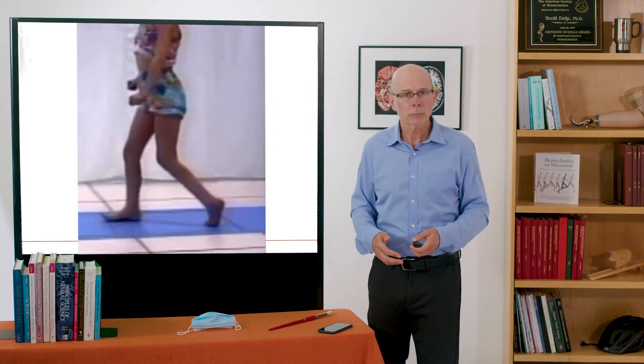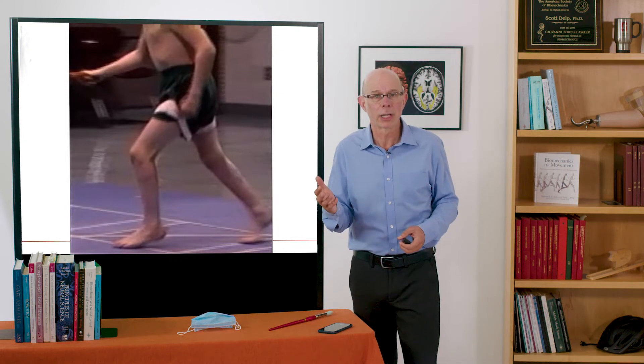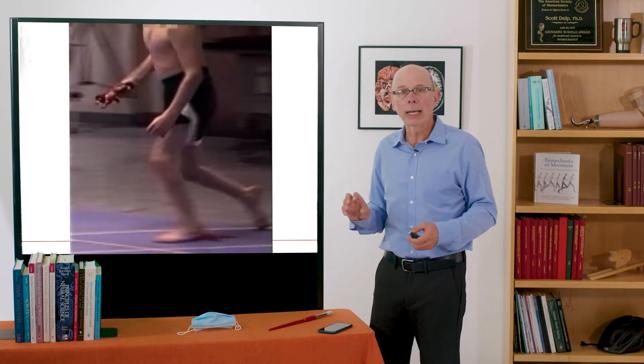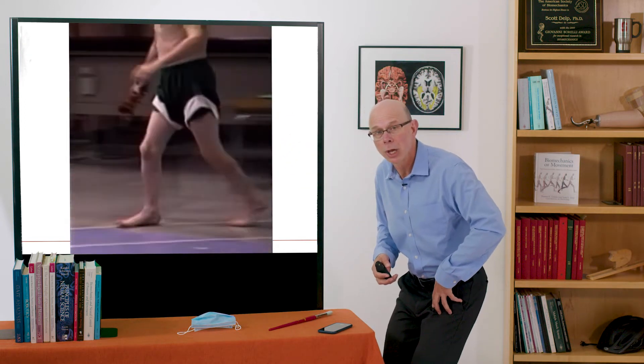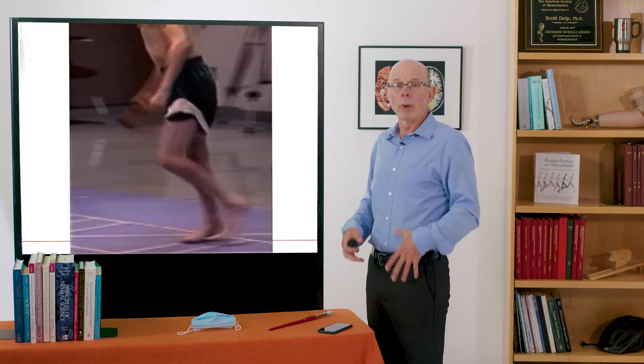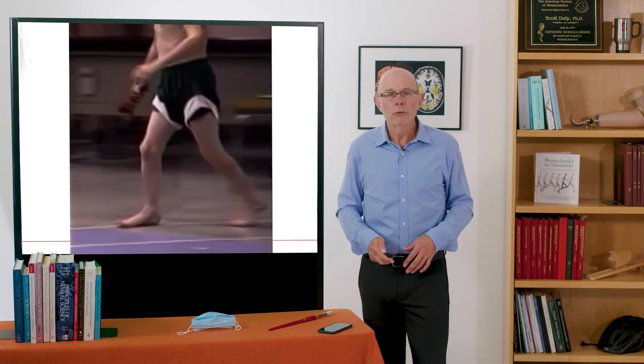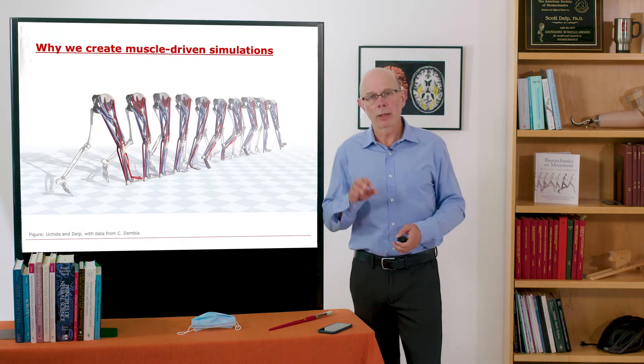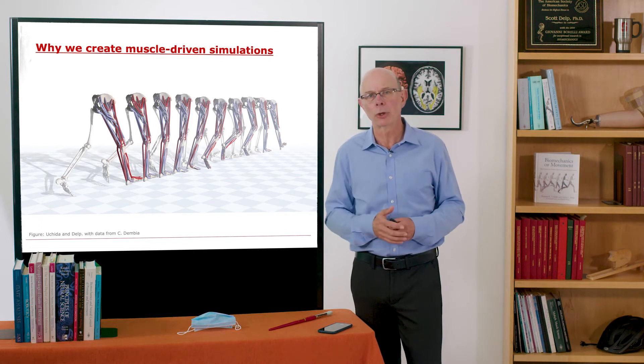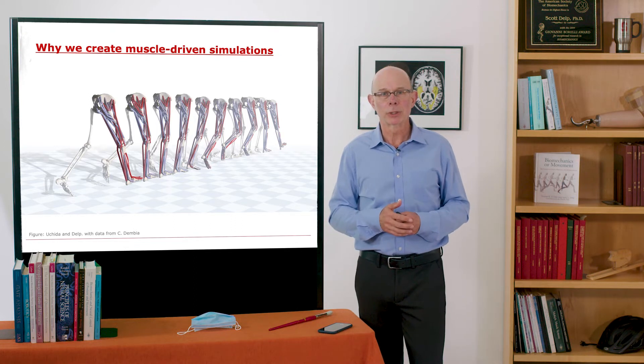We'd see patient after patient with crouch gait, for example, and we didn't know the contributing factors. In this case again, was it tight hamstrings or was it tight hip flexors? Maybe they needed a lengthening of the hip flexor muscles to get them more erect and less crouched. So we need to understand the actions of muscles during typical gait and during crouch gait to determine the causes of crouch gait so we can devise optimal treatments.